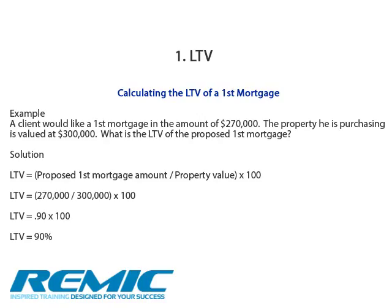So let's look at how to calculate the Loan-to-Value of a First Mortgage. In this scenario, a client would like a First Mortgage in the amount of $270,000. The property he is purchasing is valued at $300,000. The solution is the proposed First Mortgage Amount divided by the Property Value, all multiplied by 100. In this scenario, it would be $270,000 divided by $300,000 multiplied by 100, which would equal 0.90 times 100, and therefore the Loan-to-Value would be 90%.